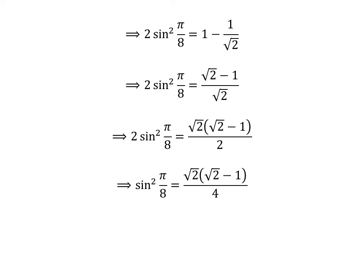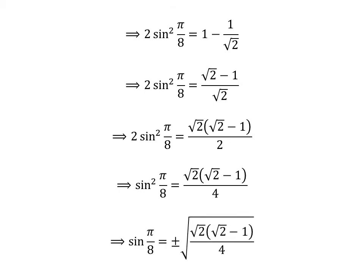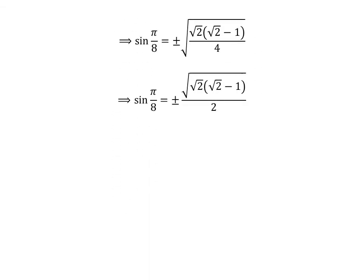Moving the factor of 2 from the left hand side to the right hand side, the denominator becomes 2 times 2, that is 4. Taking the square root of the whole expression gives us sine of pi upon 8 is equal to plus or minus the square root of square root of 2 times (square root of 2 minus 1) upon 4. As the square root of 4 is 2, sine of pi upon 8 is equal to plus or minus the square root of square root of 2 times (square root of 2 minus 1) upon 2.